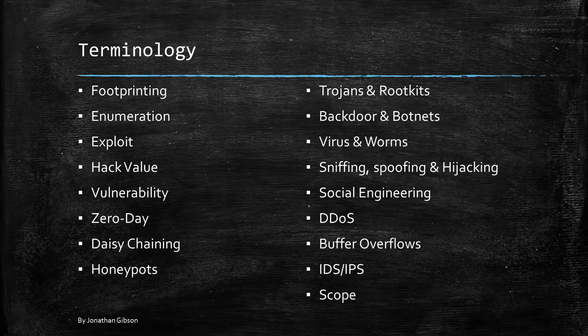Viruses and worms: a computer virus is a type of malicious software program that, when executed, replicates by reproducing itself or infecting other computer programs by modifying them. A computer worm is a standalone malware program that replicates itself in order to spread to other computers. It uses a computer network to spread itself, relying on security failures on the target computer to access it. Unlike a computer virus, it does not need to attach itself to an existing program.